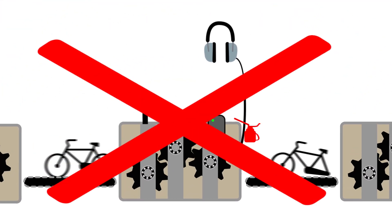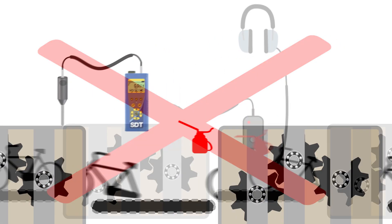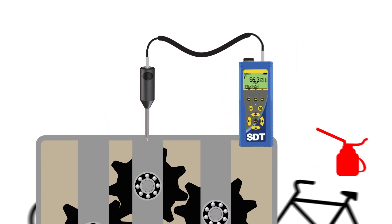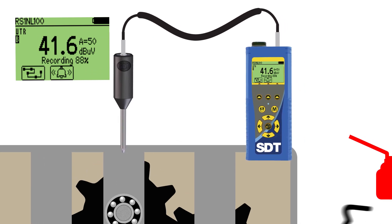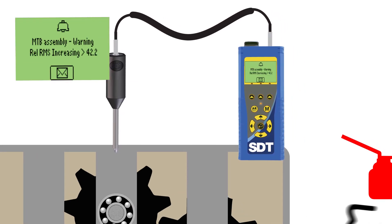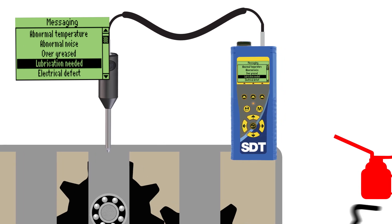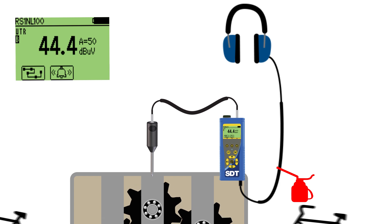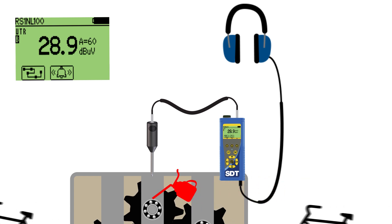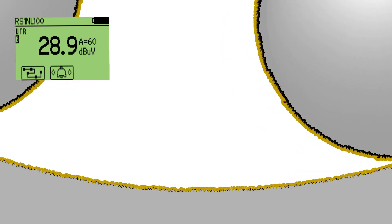Don't use listen-only ultrasound devices. Measuring friction levels requires the accuracy and repeatability of the digital SDT 270 ultrasonic data collector. Whether predicting greasing intervals or actually applying new lubricant, depend on the precision of SDT's digital decibel display to avoid over and under lubrication.